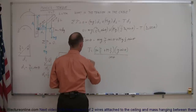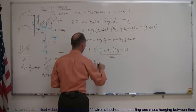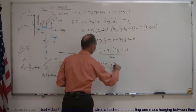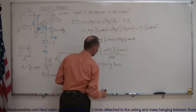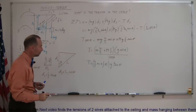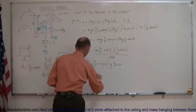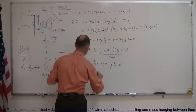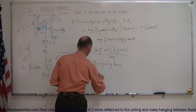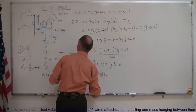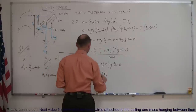So T equals four-fifths times the little mass plus one-half times the big mass, all times g times the tangent of theta. Now I can plug in the numbers. This equals four-fifths times the little mass of 50 kilograms plus one-half times the mass of the beam, which is 200 kilograms.